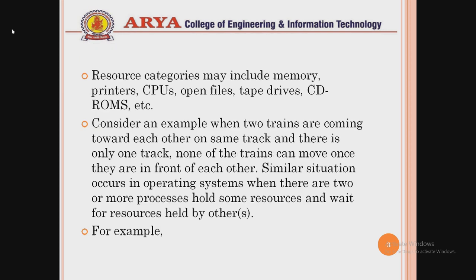In the next slide we discuss an example related to operating systems. A resource can be of many types — it can be categorized as printer, scanner, plotter, CPUs, tape drives. Another example of deadlock is when two trains are coming towards each other on the same track and there is only one track available, so neither train can move once they are in front of each other.